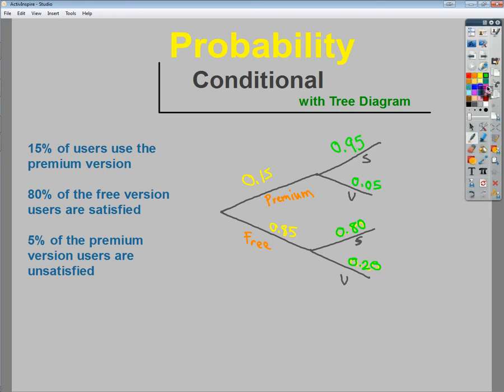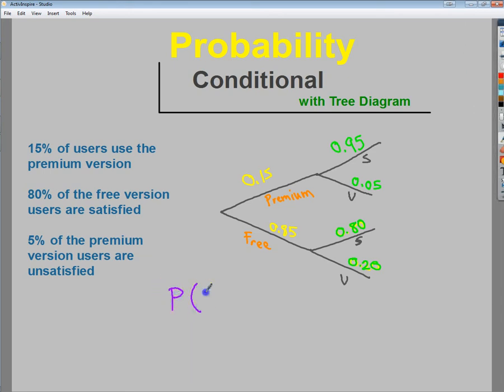From here, I want to know what the probability is of my free users and them being unsatisfied. So what's the probability of them being free and unhappy? So in order to do that, I need to take the probability of free. And I need to multiply that by the probability of unsatisfied when they are free. So how unhappy, what's the probability somebody's unhappy, even when they got the free version? So what I'm going to do is just make like a little line that sort of indicates.